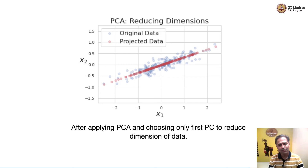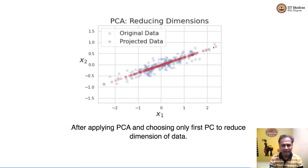So that is it from principal component analysis. We will be using PCA for an unsupervised way of dimensionality reduction or feature reduction. We will study more technical details about principal component analysis in the later weeks of the machine learning techniques course.